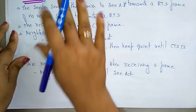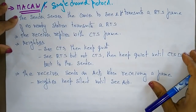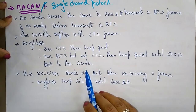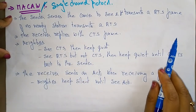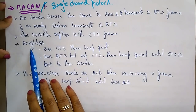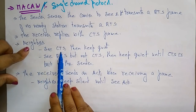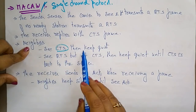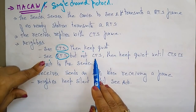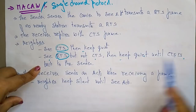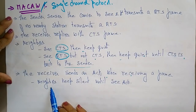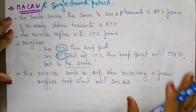MACAW is a single channel protocol where the sender is initiated. The sender first sends a carrier sense and transmits the Request to Send frame. If no nearby station has transmitted a Request to Send, the receiver replies with a Clear to Send frame. Neighbors that see the CTS keep quiet. If a neighbor sees the RTS but not the CTS, it keeps quiet until the CTS is sent back to the sender. The receiver sends an acknowledgement when a frame is received.